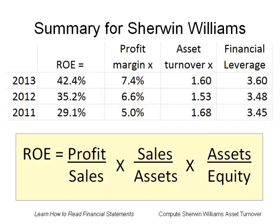This is the return on equity component summary for Sherwin-Williams. In the previous module we computed and interpreted the profit margin ratio. In this module we will look at the asset turnover ratio. We can see that the asset turnover has increased from 1.53 in 2012 to 1.6 in 2013.